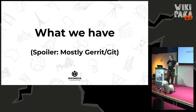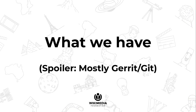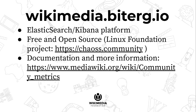What we have currently is mostly about Git repositories and code repositories. We mostly use Gerrit for code review. We have our own Gerrit instance at gerrit.wikimedia.org, and for this we've been using a platform called wikimedia.bitergia.io. If you've seen Elasticsearch and Kibana, this standard platform might be familiar to you.